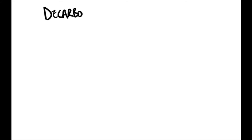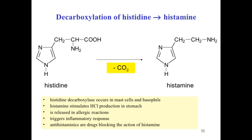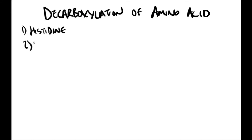Moving on to decarboxylation: the removal of the carboxyl group is known as decarboxylation, releasing carbon dioxide. An example is histidine being decarboxylated to histamine by decarboxylase. This occurs in mast cells and basophils and is released in allergic and inflammatory responses. Drugs targeting this are known as anti-histamines.